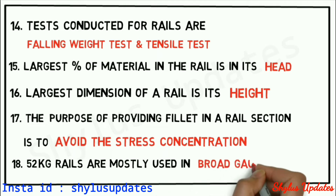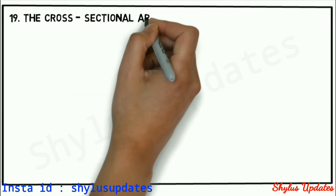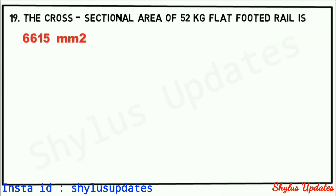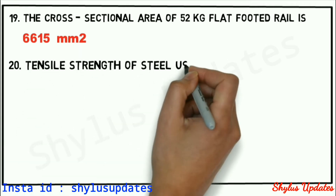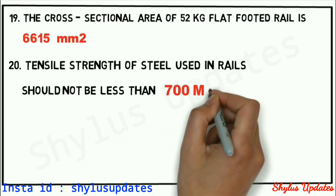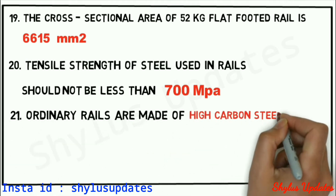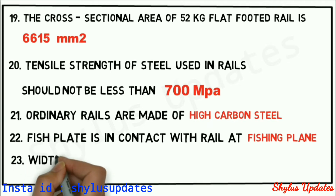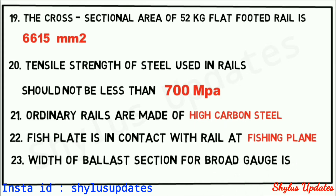The purpose of providing fillet in a rail section is to avoid stress concentration. 52 kg rails are mostly used in broad gauge. The cross-sectional area of 52 kg flat-footed rail is 6615 mm². Tensile strength of steel used in rails should not be less than 700 MPa. Ordinary rails are made of high carbon steel. Fish plate is in contact with the rail at the fishing plane. Width of ballast section for broad gauge is 3.35 meters.